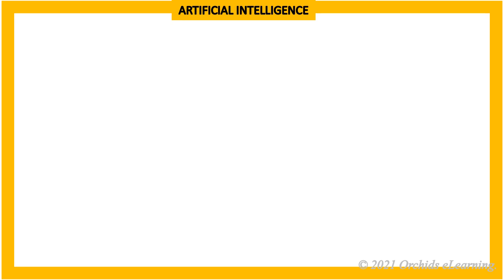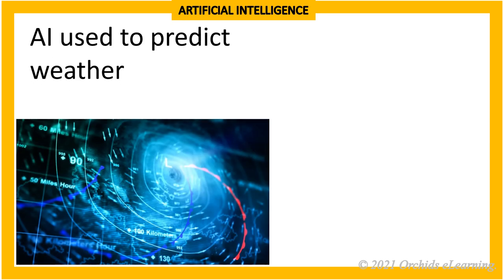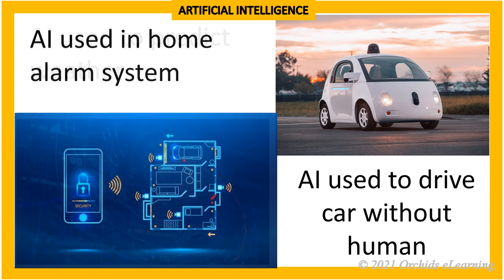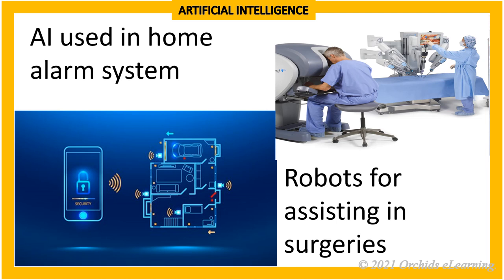AI in Everyday Life: AI is used to predict approaching storms and automatically issue warnings. AI is used to drive cars without human intervention, which might drastically reduce road accidents. AI in home alarm systems is used to identify the difference between homeowners and intruders. Robots are also used as surgical assistants, being used to quickly pass the correct surgical tools to doctors.